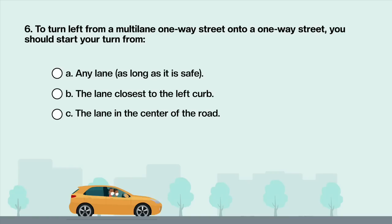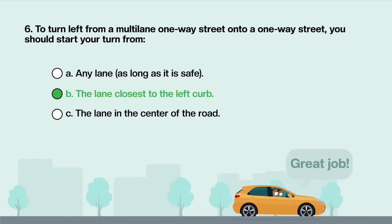To turn left from a multi-lane one-way street onto a one-way street, you should start your turn from: A. Any lane as long as it is safe. B. The lane closest to the left curb. C. The lane in the center of the road. Answer is B: The lane closest to the left curb.